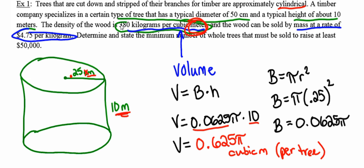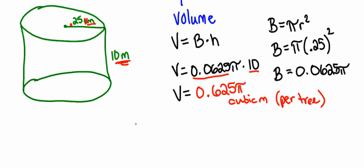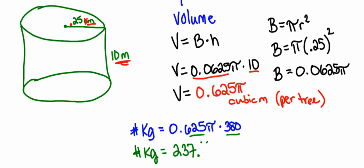Now I'm going to figure out how many kilograms that would be in each tree trunk. To find the number of kilograms, I'm going to multiply the volume in each tree times 380 kilograms per cubic meter. Since I have a lot of numbers running around, I'm going to label that this represents the number of kilograms. The number of kilograms is 0.625π times 380 kilograms per cubic meter. I'm going to multiply 0.625 times 380, so the number of kilograms is 237.5π.